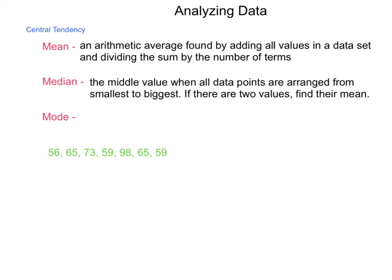Next, median. The median is the middle value when all data points are arranged from smallest to biggest. If there are two middle values, which will happen if you have an even number of data points, you find the mean of these two.